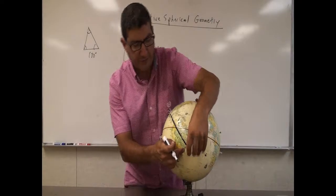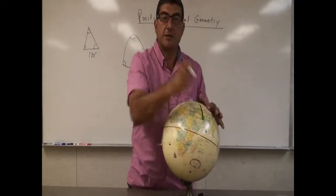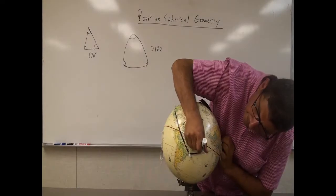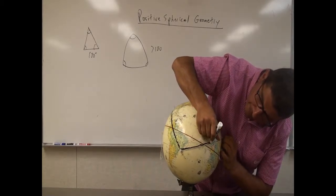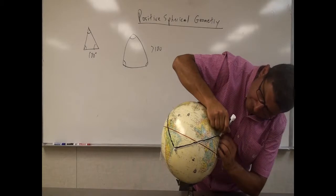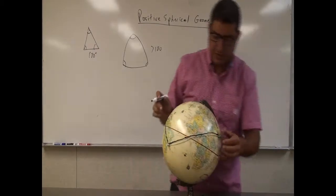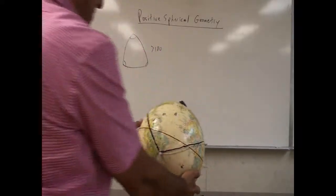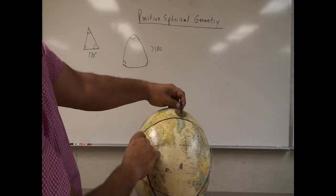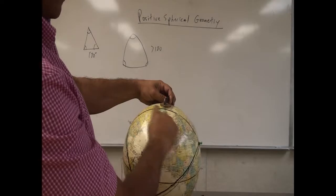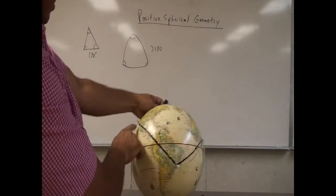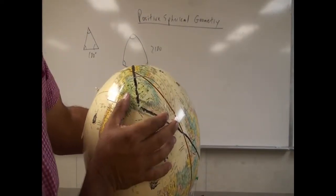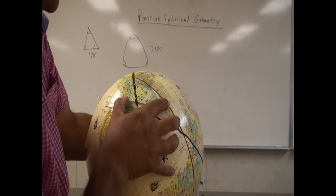Then I'm going to go from Rio de Janeiro to Dubai to close the triangle. You can see the triangle I have now. The triangle goes from Los Angeles over Greenland down to Dubai, and from Los Angeles down to Brazil right here.